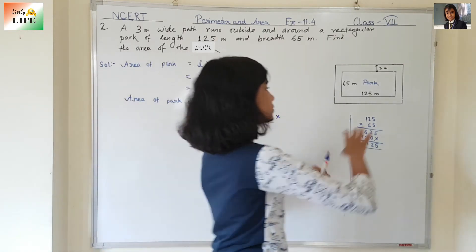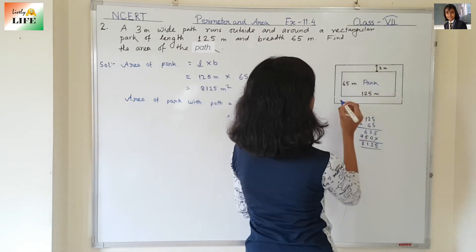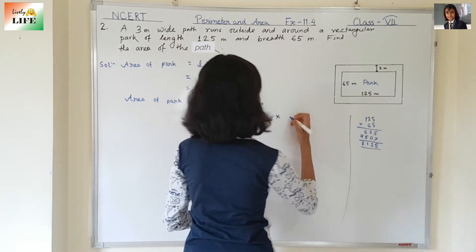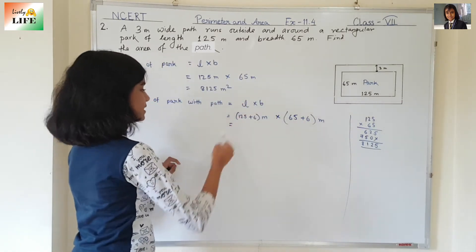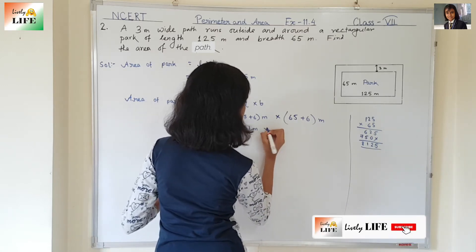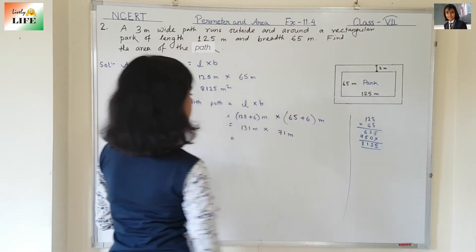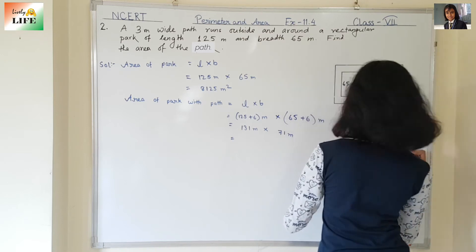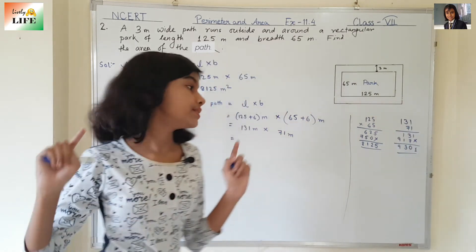For the breadth, we do the same thing. The breadth of the smaller rectangle is 65 meters, and again the path adds 3 meters on each side, so 65 plus 3 plus 3 equals 65 plus 6 equals 71 meters. So now we need to multiply 131 and 71, which gives us 9301.